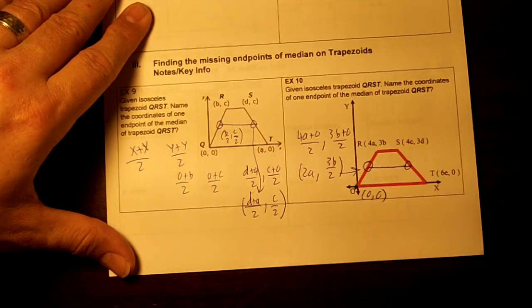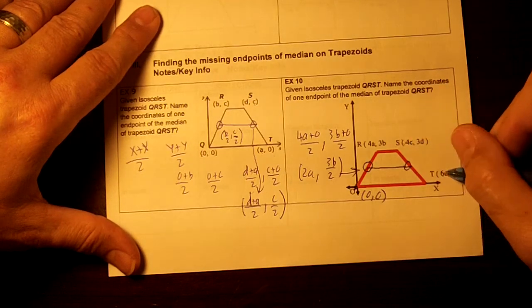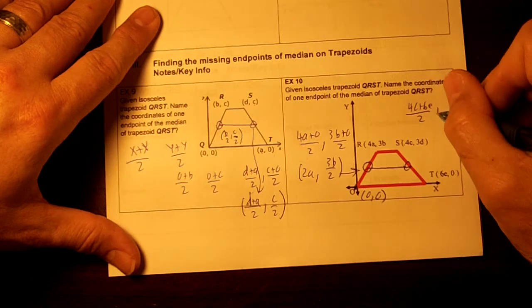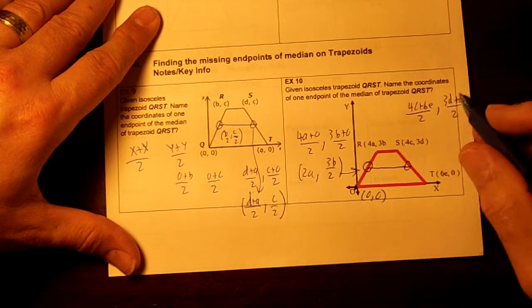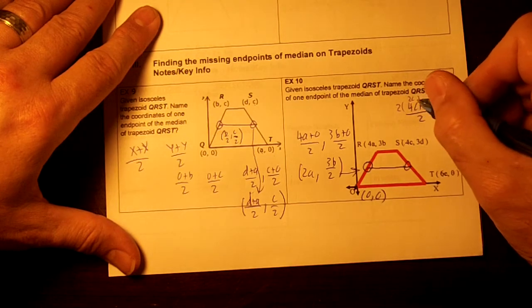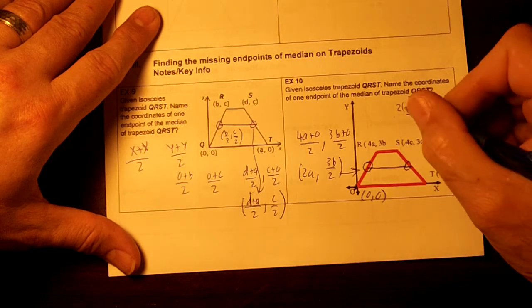So this right here is the ordered pair of that. Let's go over here and add these up. 4c plus 6e divided by 2 comma 3d plus 0 divided by 2. Now then on this one right here, we could factor out a 2, can't we? If you factor out a 2, you would get 2 parentheses 2c plus 3e, wouldn't you?